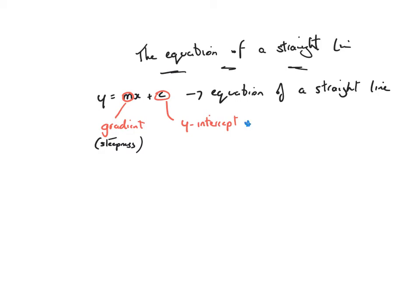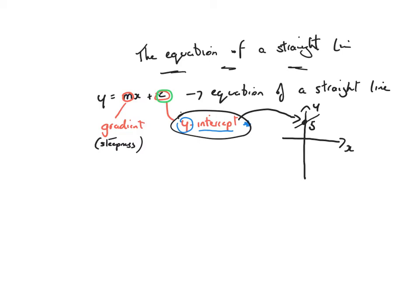Let's now think about this thing called the y-intercept. If you think about the word intercept, that means cutting into something — so it's cutting into the y-axis. So if we had an x and a y-axis like that, and if I've got a line that cuts into the y-axis, then I would call that point the y-intercept. So the y-intercept, we're giving it the letter c. It's just wherever you cut the y-axis.